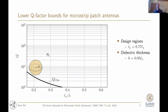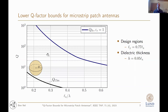We represent the bounds with respect to the patch design region dimension normalized by the free-space wavelength. Let's first take a look at the Chu limit, which considers a spherical design region. When we compare this to our bounds with a relative permittivity of one for the substrate, there are orders of magnitude difference.